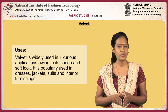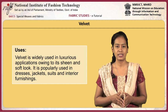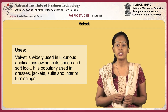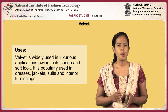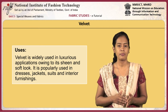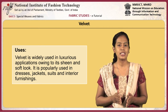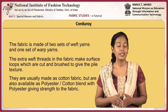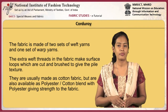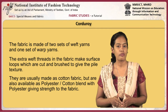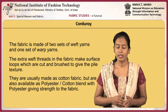Velvet is widely used in luxurious applications owing to its sheen and soft look. It is popularly used in dresses, jackets, suits, and interior furnishings. The fabric is made of two sets of weft yarns and one set of warp yarns. The extra weft threads in the fabric make surface loops which are cut and brushed to give the pile texture.